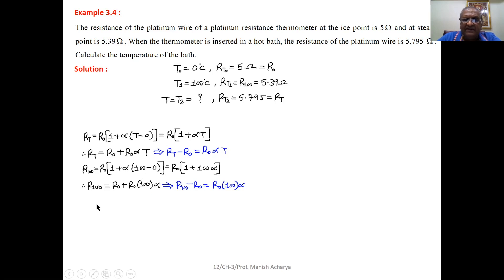Again, simplify this one. So R100 equal to R0 plus R0 into 100 into alpha. Take this R0 on left hand side, so R100 minus R0 equal to R0 into 100 into alpha.